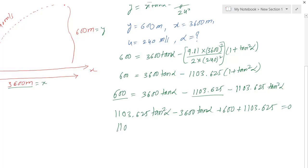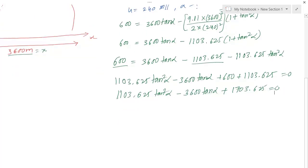So it is 1103.625 tan squared alpha minus 3600 tan alpha plus 1103.625 equals 0. Now it's an equation of the form ax squared plus bx plus c. That means the degree of this equation is 2, so I will be having two values for tan alpha.